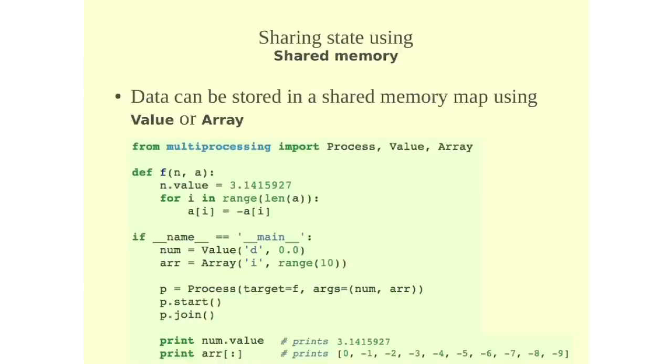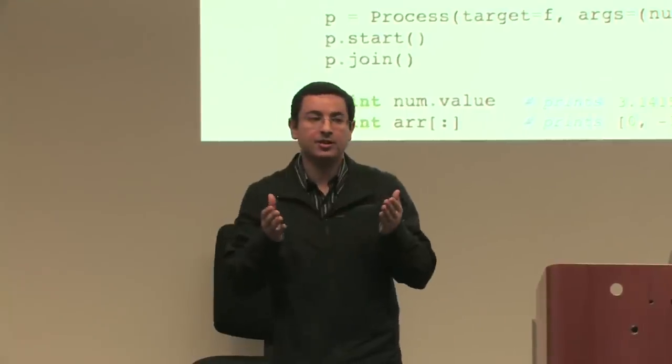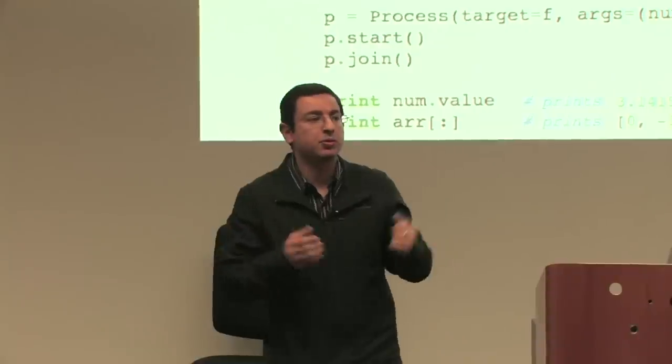There is value and array. So you create an instance of value and you pass it a type code. Type code is similar to the array module. If you are familiar with the array module, there are certain types that you can create. For example, this one is a decimal and the array is an array of integers. And again, you pass these to your target function as arguments. And the target function can access them. And this data that you are sharing, it's in a shared memory space. And processes can access this data. So another process can see the changes that you made to this particular variable.